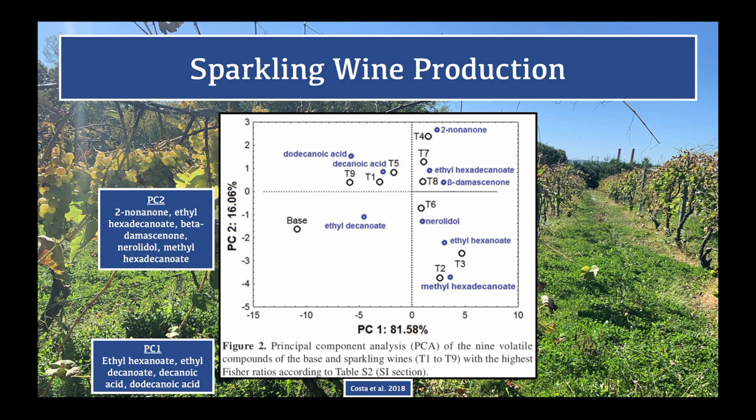This principal component analysis chart shows that PC1 explains 81.58% of the variability and is mainly related to ethyl hexanoate, ethyl decanoate, decanoic acid, and dodecanoic acid. PC2 explains 16.06% of the variability and relates to 2-nonanone, ethyl hexadecanoate, beta-damascenone, nerolidol, and methyl hexadecanoate. The important point is that all compounds on the right side are related to positive aromas in the wine, and all trials on the right side include adding lees or commercial manoproteins.